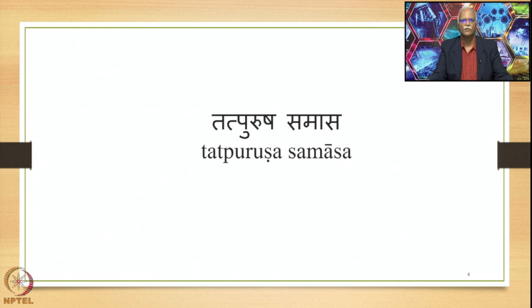In this course we have concentrated on the Tatpurusha Samasa, and we have been saying that Tatpurusha Samasa is by far the most productive of the Samasas in Sanskrit. There are four types of Samasas generally known: Avyaibhava, Tatpurusha, Bahuvrihi, and Dvandva, in that order as stated in the grammar of Panini. Amongst them, Tatpurusha is of a particular kind and particular feature.